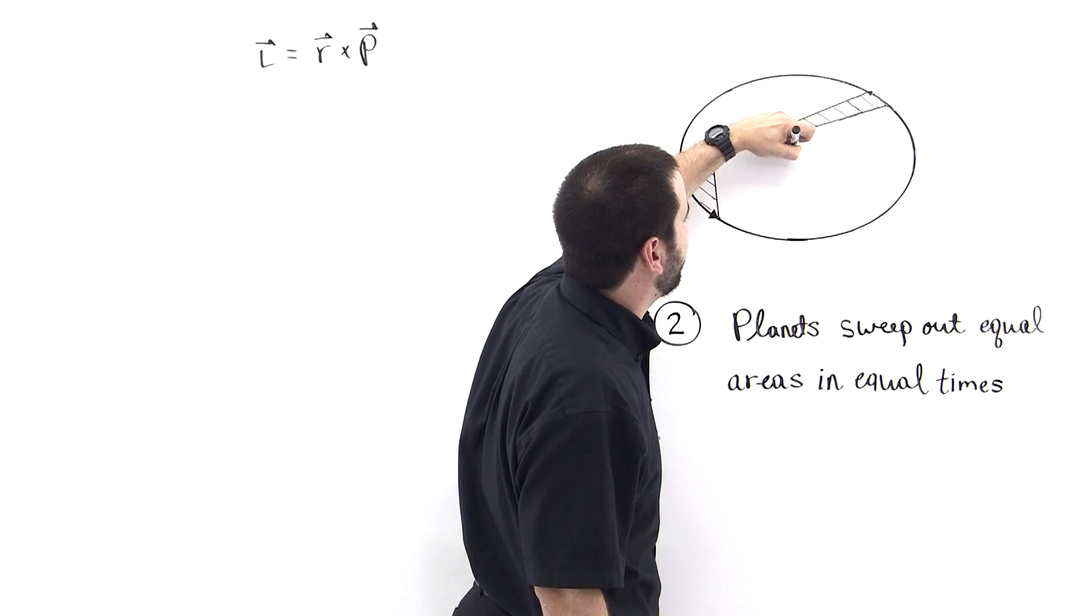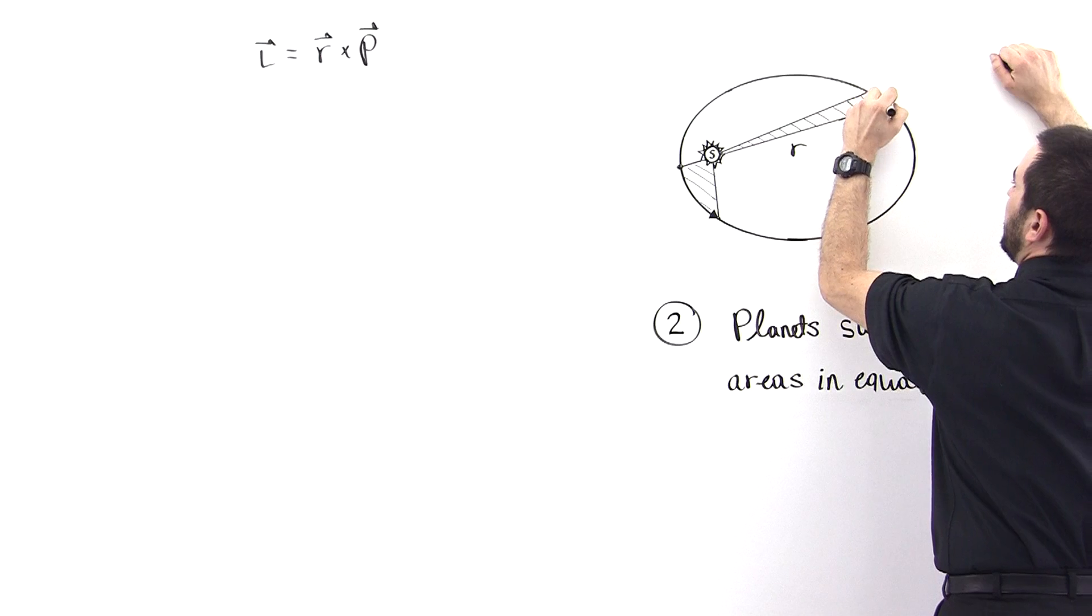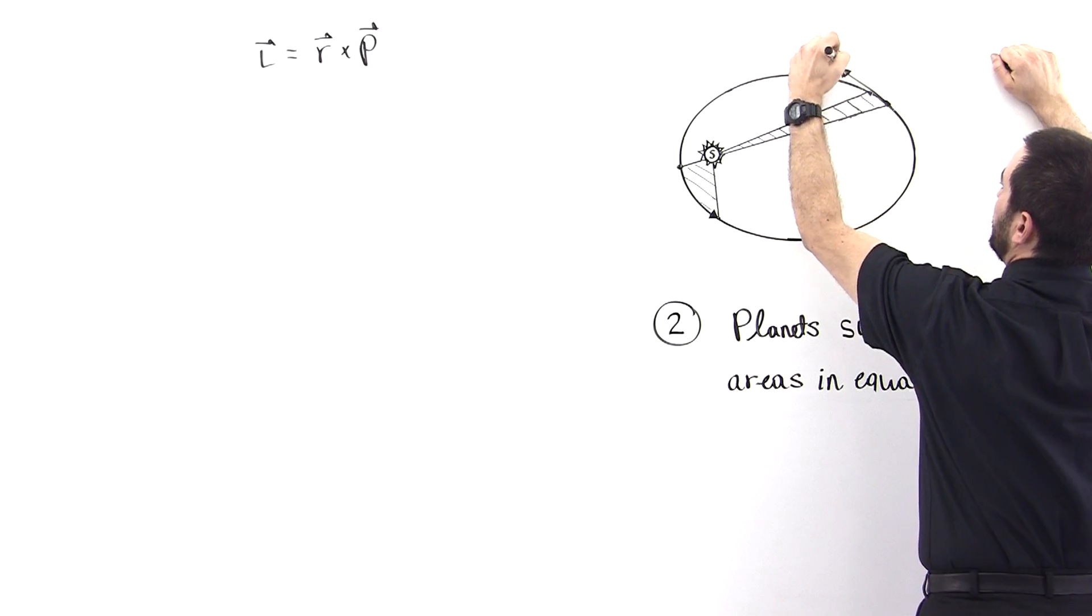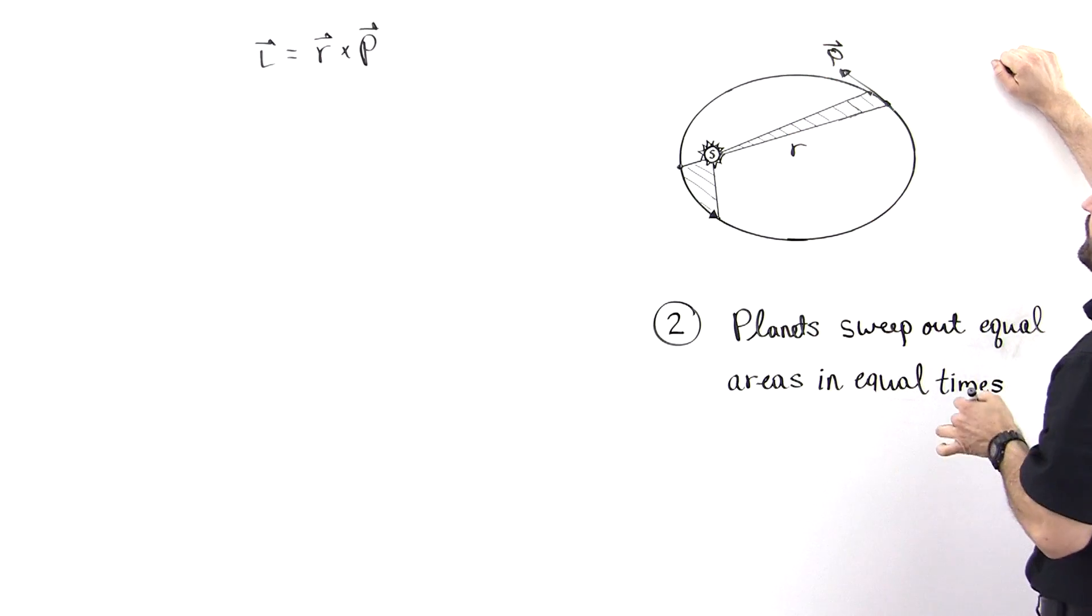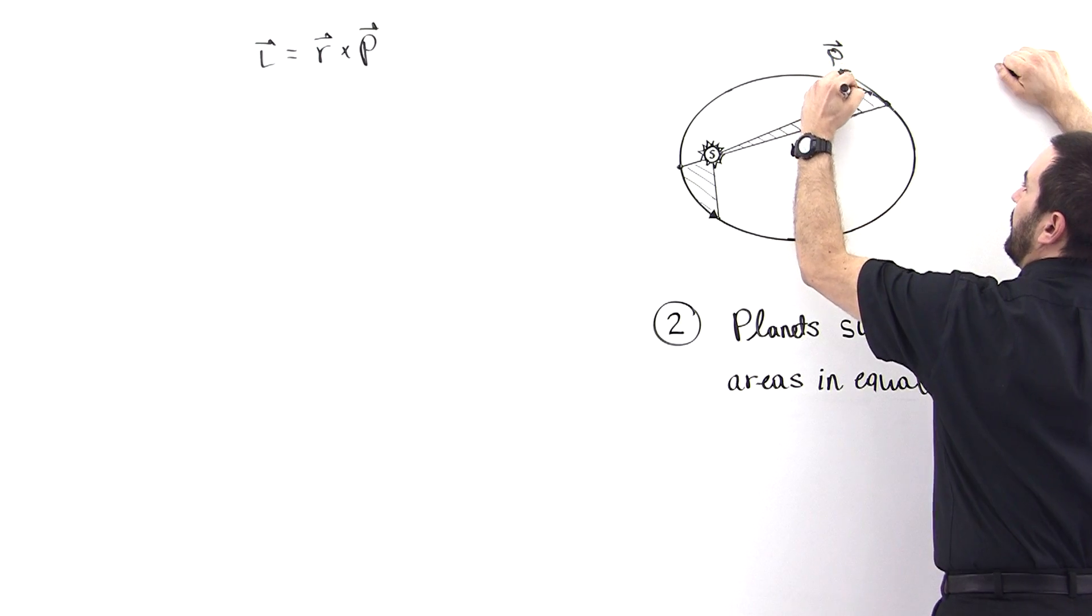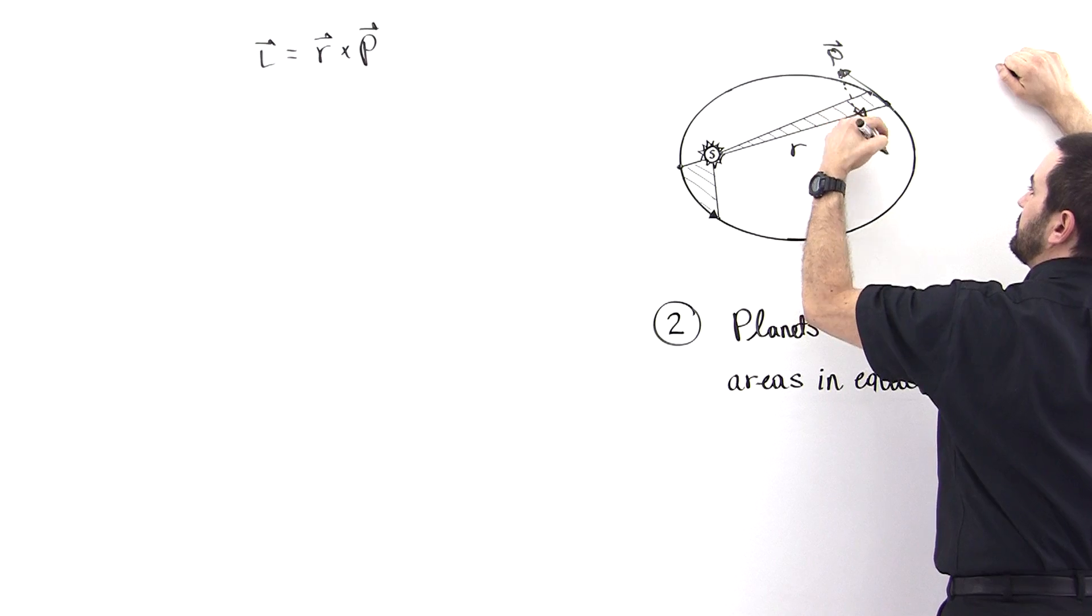So we know that only the perpendicular component of the linear momentum will contribute in the cross product. We're going to label this r right here and then let's draw the linear momentum. It has a velocity that's off like that, which results in some linear momentum like this. And if we find its components, it has components like this. This is p radial,